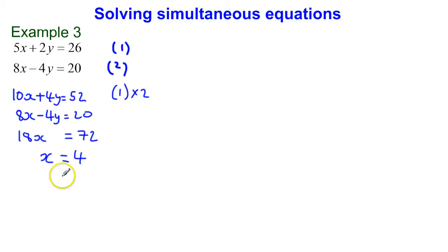So 5x plus 2y is equal to 26. I know x is 4, so we've got 5 times 4 plus 2y is equal to 26, which tells me that 20 plus 2y is equal to 26. Subtract 20 from both sides, so 2y is equal to 6, and y is equal to 3.